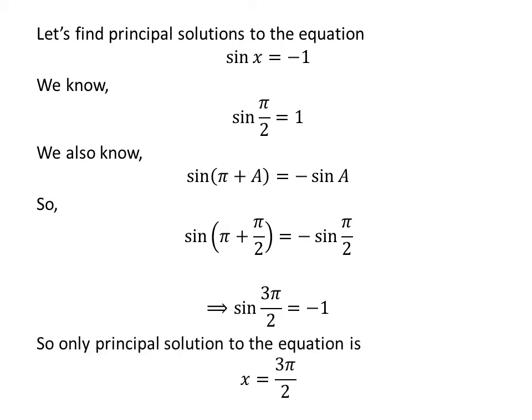There is only one principal solution to the equation sin(x) = -1, which is 3π/2.